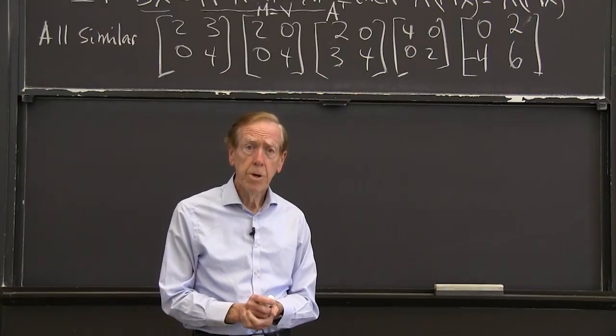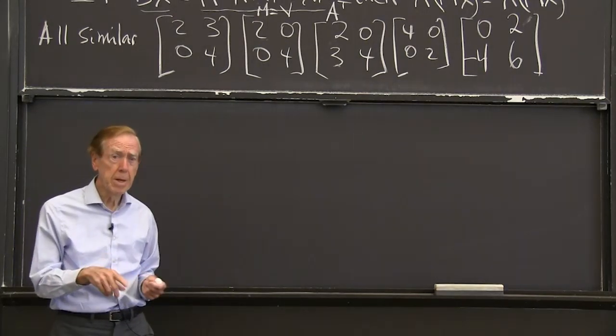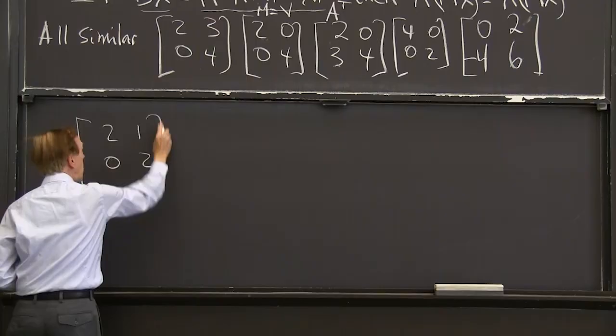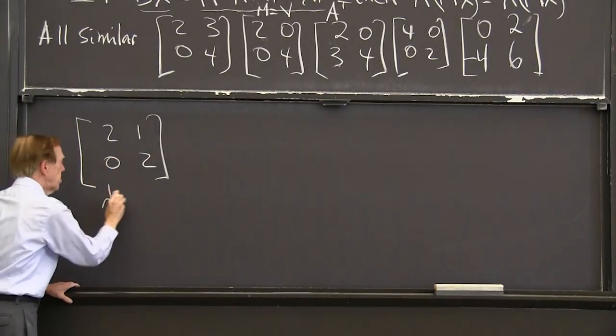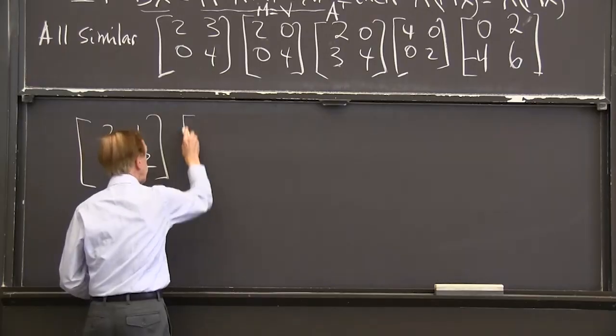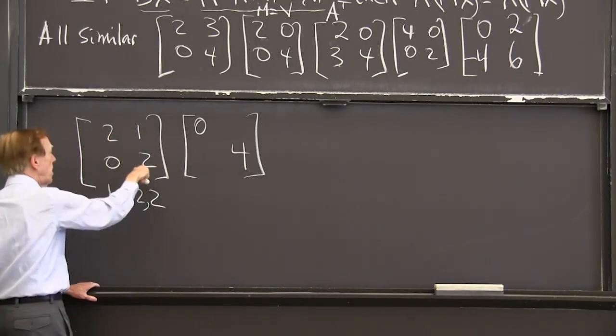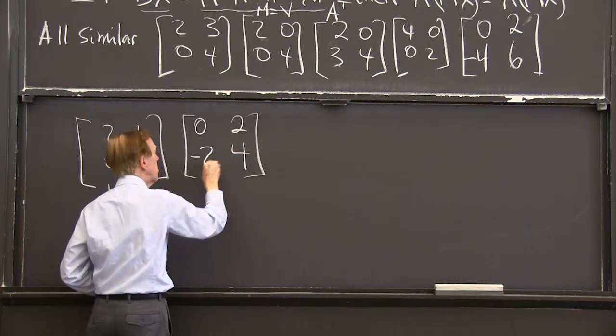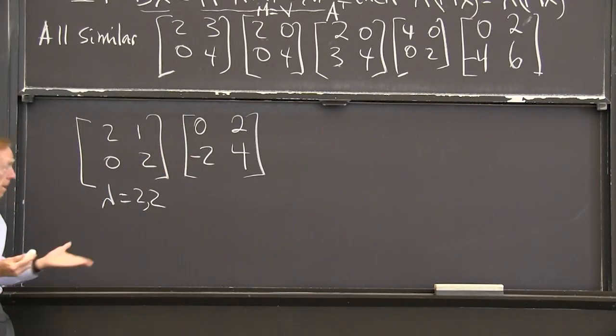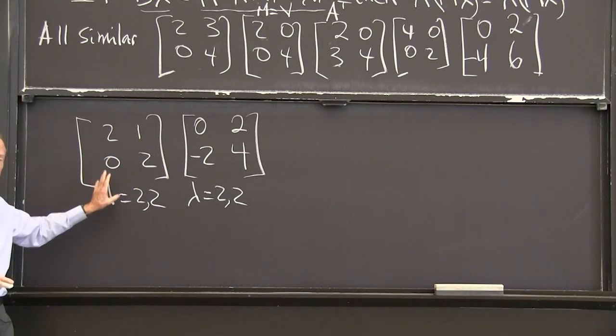So I want to do another example of similar matrices. What will be different in this example is there'll be missing eigenvectors. So let me say 2, 2, 0, 1. So that has eigenvalues two and two, but only one eigenvector. Here is another matrix like that. So the trace should be four. The determinant should be four. So maybe I put a two and a minus two there. I think that has the correct trace four and the correct determinant also four. So that will have eigenvalues two and two and only one eigenvector. So it's similar to this.